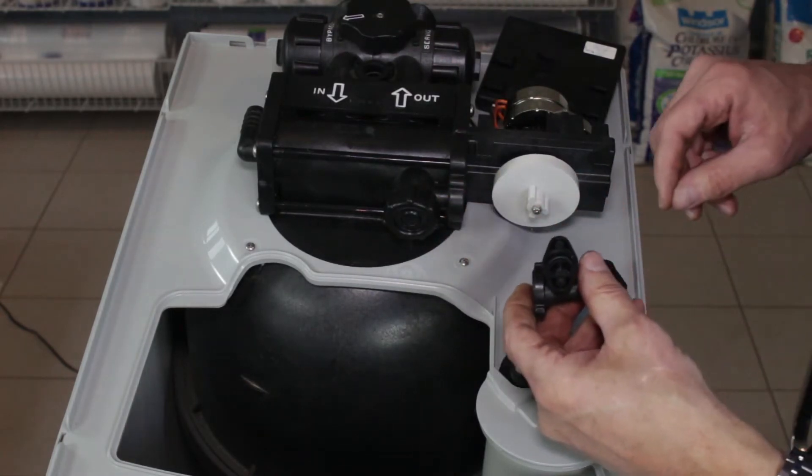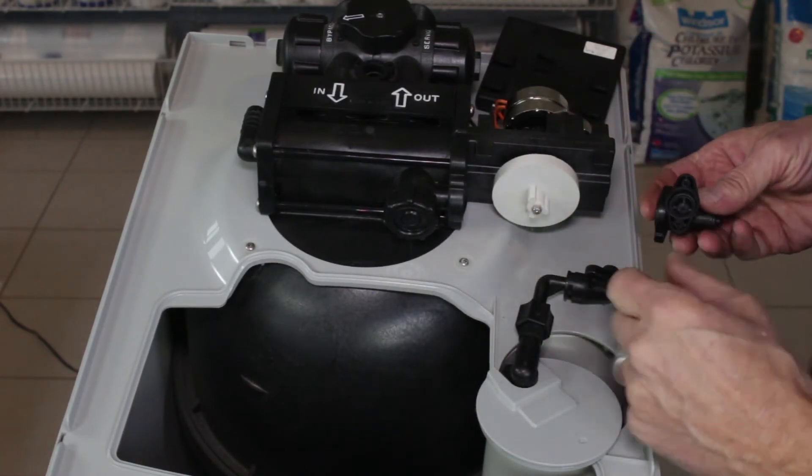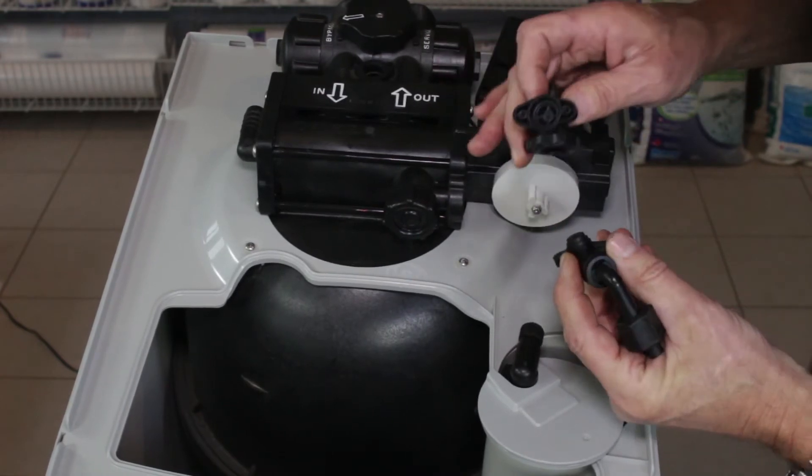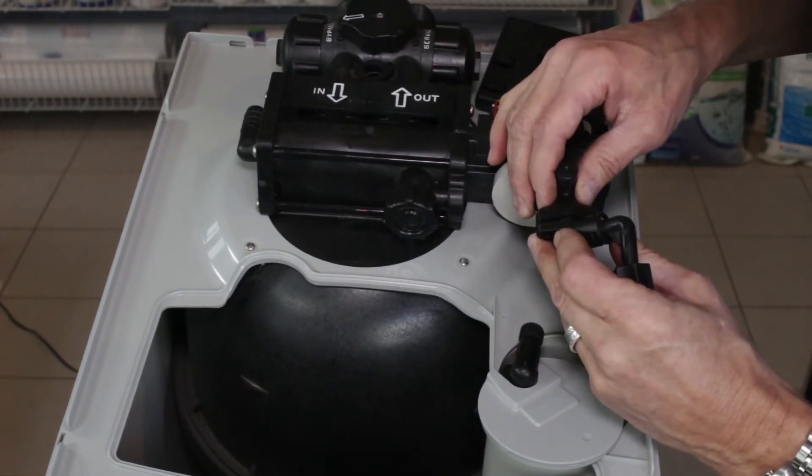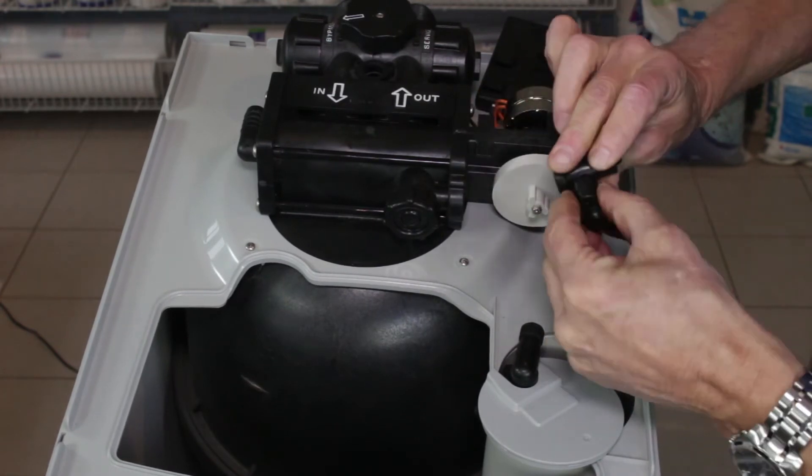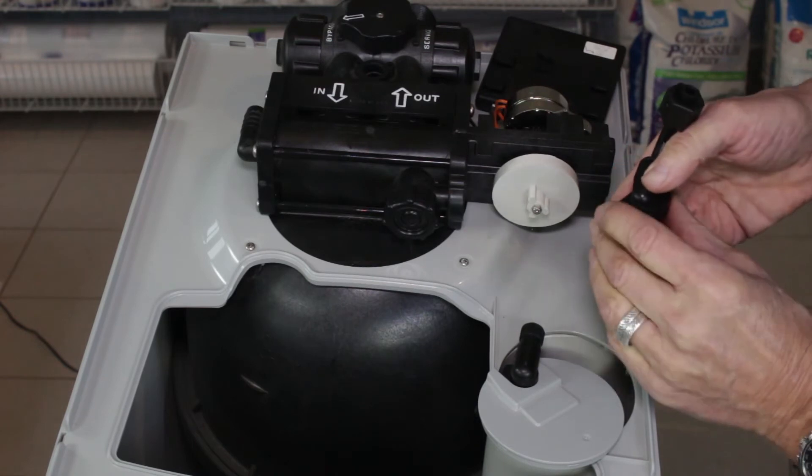So once you've cleaned that out, then what you can do is reassemble the whole unit. We can reassemble these two pieces, so they're going to go together like this. You can see it would be positioned here, so we can put the two screws back in.